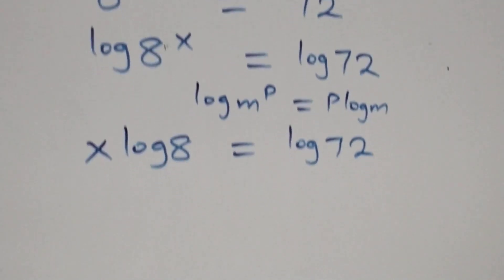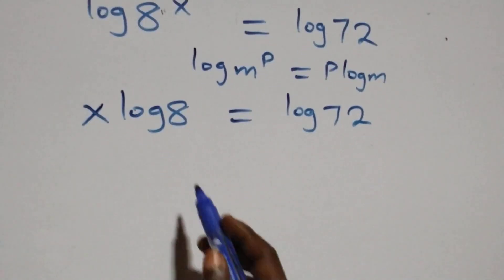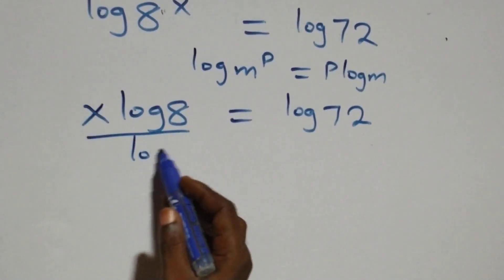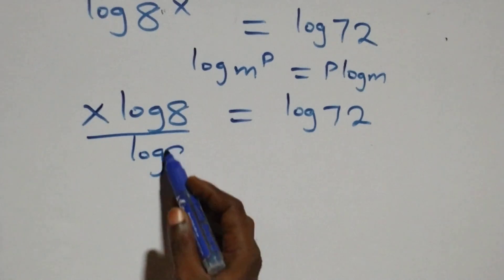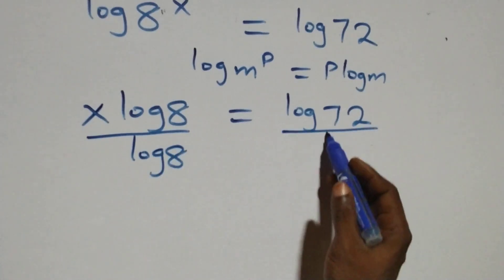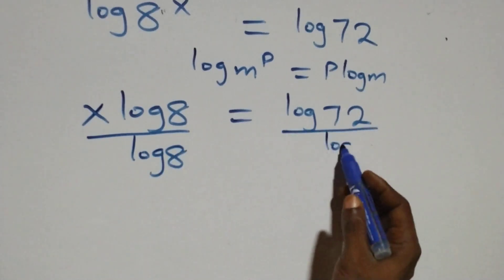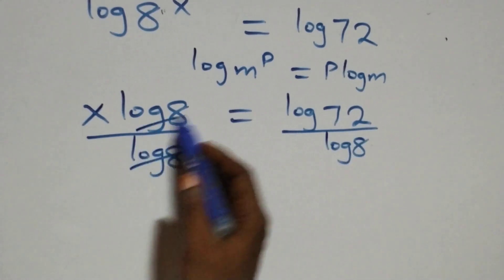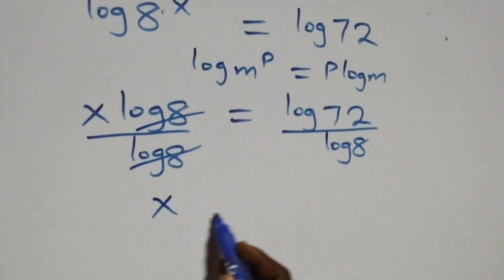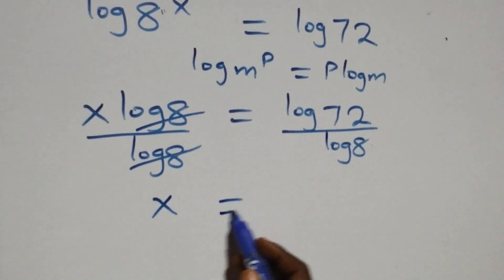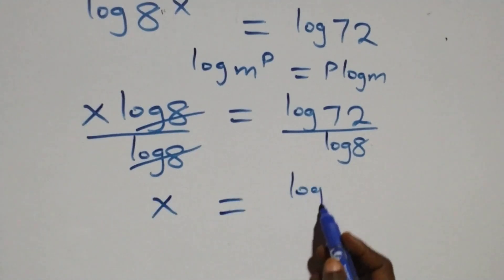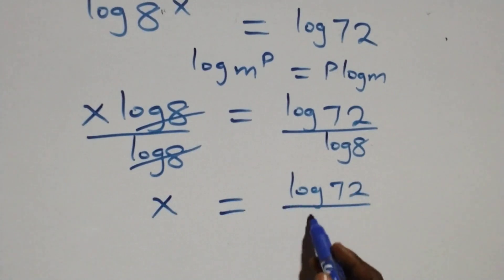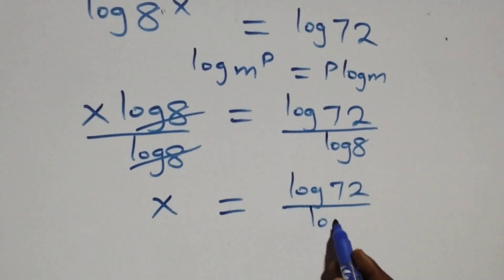Next, we divide both sides by log 8 — divide this side by log 8 and also divide the other side by log 8. The log 8 terms cancel each other, and we have x left, which equals log seventy-two divided by log 8.